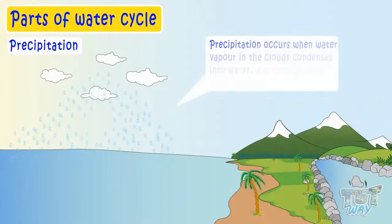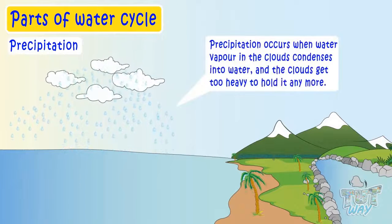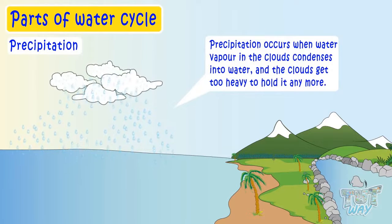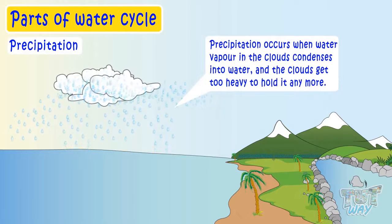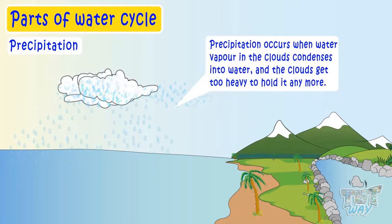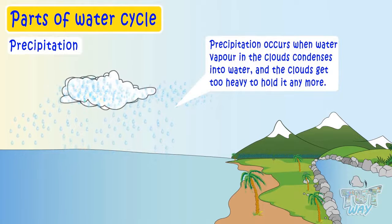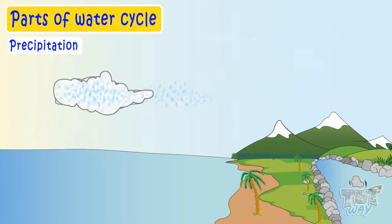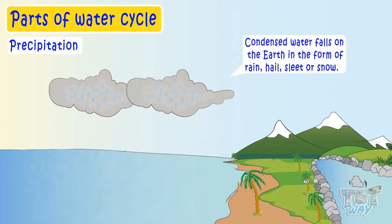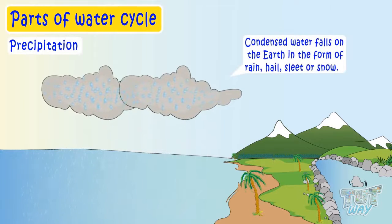Precipitation occurs when water vapors in the clouds condenses into water. And the clouds get too heavy to hold it anymore. And condensed water falls on earth in the form of rain, hail, sleet, or snow.